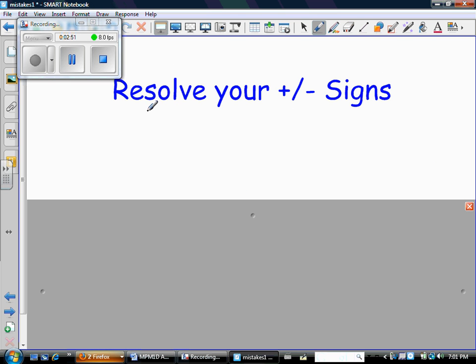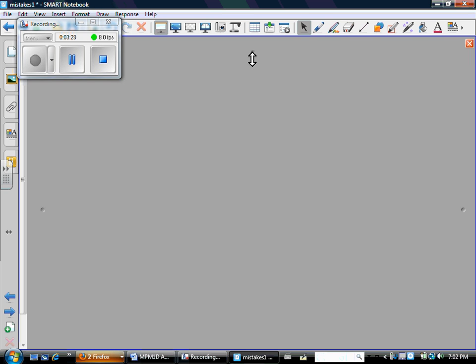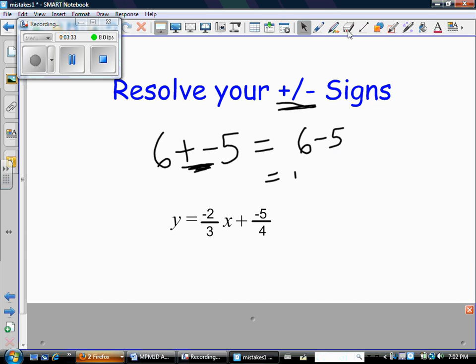My next complaint has to do with your unresolved plus minus signs. So let me give you just an old fashioned example and then we'll talk specific. At no time should you ever leave two signs side by side like this. You all know from grade six or seven or eight or whenever that that means six minus five. These are plus and minus signs and they have to be resolved.